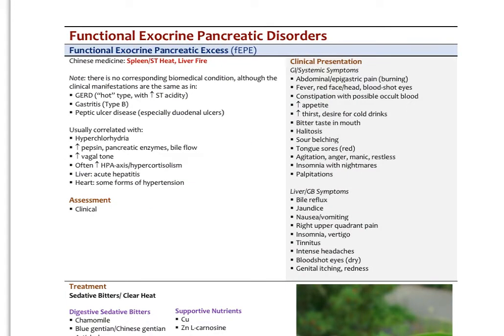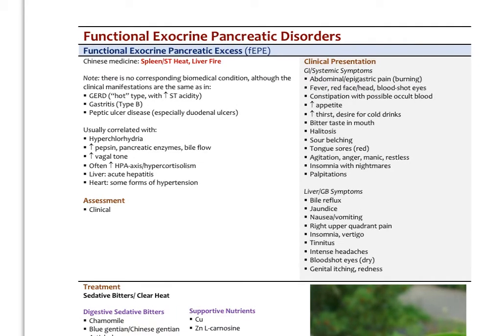The opposite state — functional exocrine pancreatic excess — would be a vagal excess pattern. We usually think of the parasympathetics as deficient, but excess vagal phenomena do occur. Irritable bowel syndrome was historically treated with atropine, which blocks parasympathetics; motion sickness is an over-activation of parasympathetics; and an old treatment for peptic ulcer was severing vagus nerve fibers to block acid secretion. In Chinese medicine this is spleen-stomach heat or liver fire.